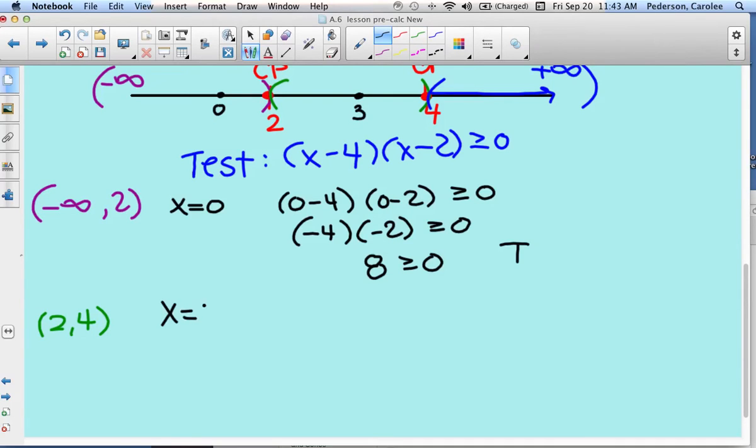So I'm going to let x equal 3 and substitute it back in the blue test interval. 3 minus 4, 3 minus 2, greater than or equal to 0. Simplify those parentheses. Multiply the two numbers on the left and read it. Is negative 1 greater than or equal to 0? No, that's false. So this will not be a solution in the green.